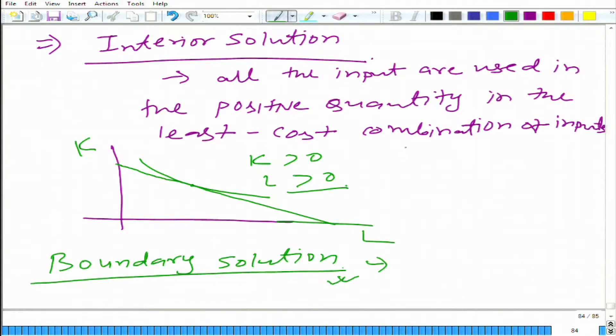If you pay attention to interior solution, if the isoquant is differentiable at all points, then the tangency criteria that we had learned is applicable. We can use tangency criteria to get the least cost combination of inputs or the optimal solution of the cost minimization problem. Remember, even when the inputs were perfect complements, we got interior solution, but there we cannot apply the tangency criteria because the isoquant is not differentiable at all points.